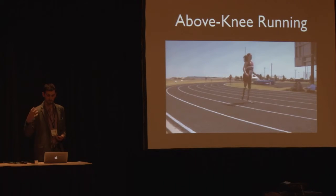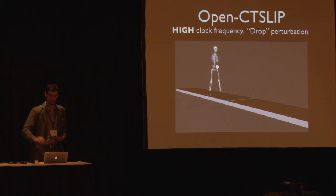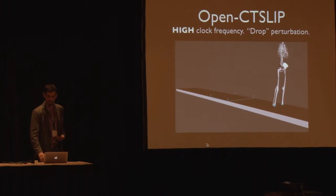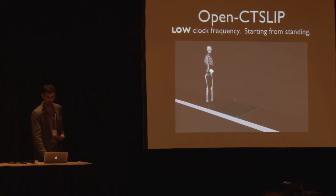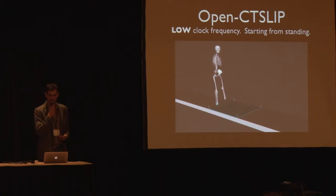This is what we see, and then this is what the simulation does. This is a drop test where the system is dropped from a perturbed state, and you'll see it pretty quickly goes to a steady-state motion — that demonstrates stability for running. This is a high clock frequency. At a low clock frequency, starting from standing and turning the system on, it can also stably transition pretty quickly to a walk cycle.